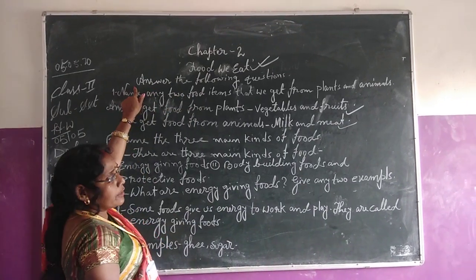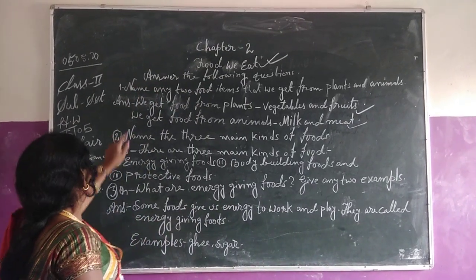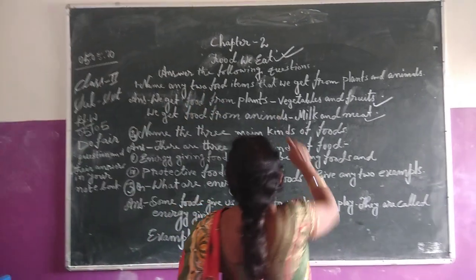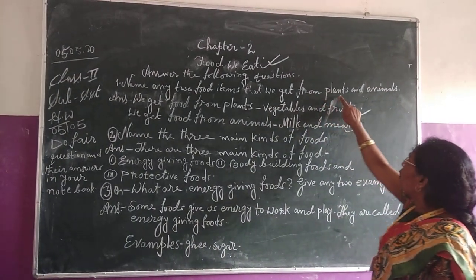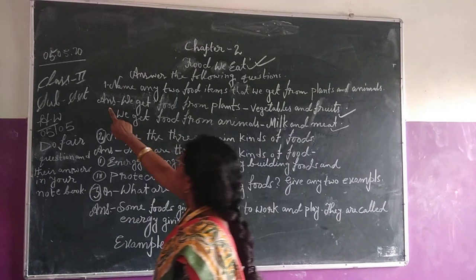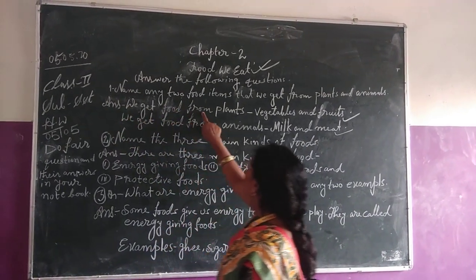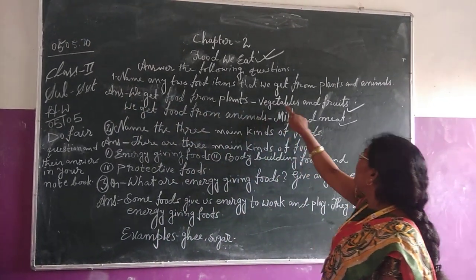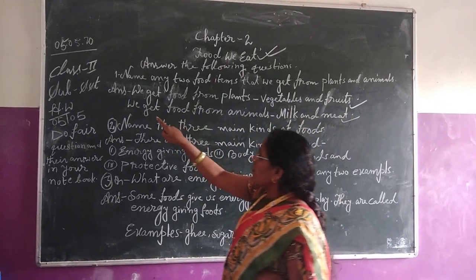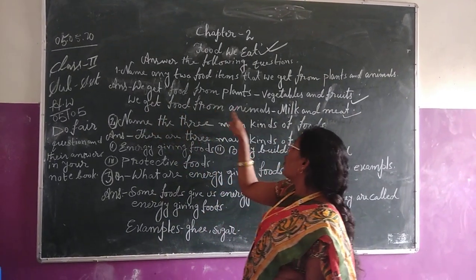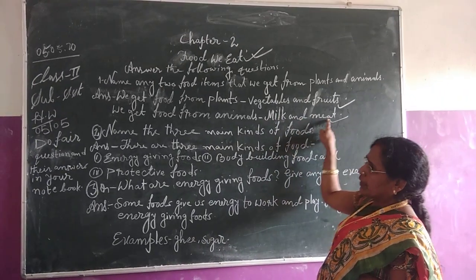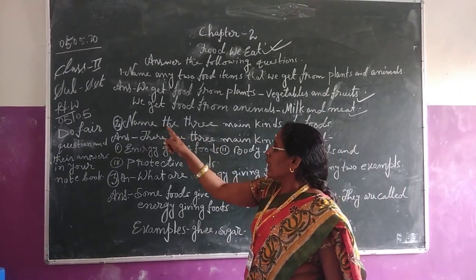Now I am writing questions and they are inside. First question: name any food I can get from plant and animal. Answer: we get food from plants — vegetables and food. From animals, we get food — meat and meat.